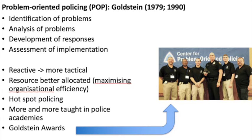It's much more about things like hot spot policing where they can look at crime data and see that there's a certain area where there's a huge amount of crime happening and focus their resources on trying to reduce that. It's more and more taught in police academies. It's a very wide-ranging, widely popular approach to policing, and they even have Goldstein awards now where they give out awards each year for the best problem-oriented approaches.